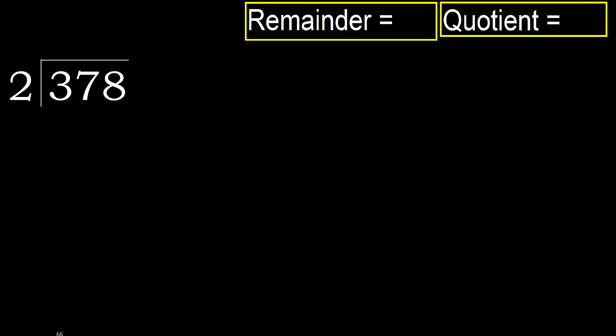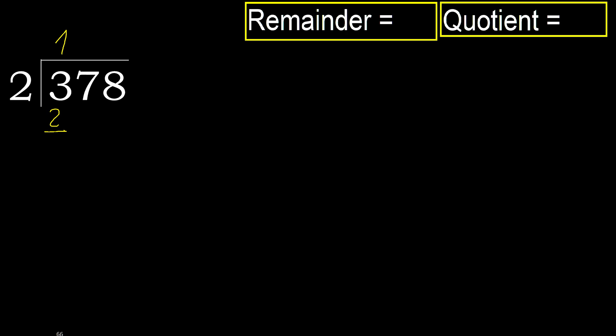378 divided by 2. 3 is not less, therefore work with 3. 2 multiplied by which number is nearest but not greater? 2 multiplied by 2 is 4 — 4 is greater. Multiply by 1: 2 is not greater. 3 minus 2 is 1. Next.